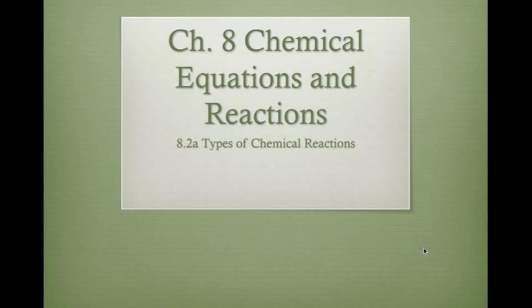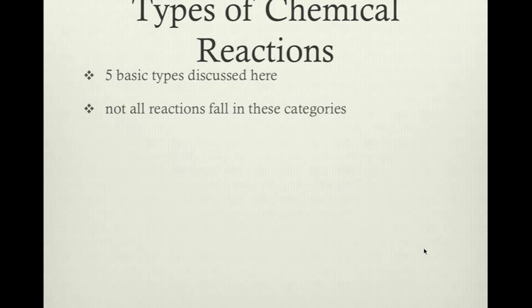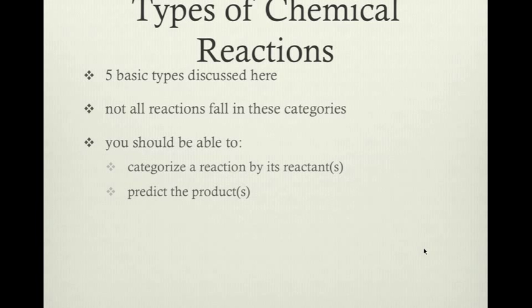We're going to talk about the types of chemical reactions. We're going to discuss only five basic types here — there are a lot of different types, but we'll keep it simple and confined to five. At the end of this, we should be able to categorize reactions by their reactants and predict the products. We'll get into more predicting the products in the next PowerPoint.